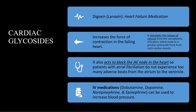Cardiac glycosides — digoxin is a heart failure medication that increases the force of contraction of the heart and stimulates the release of calcium. It also acts to block the AV node so patients with atrial fibrillation do not experience too many adverse beats from the atrium to the ventricle. IV medications such as dopamine, norepinephrine, and epinephrine are used to increase blood pressure.